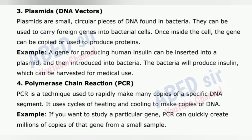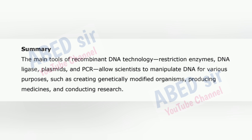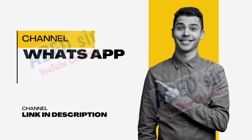The bacteria will produce insulin, which can be harvested for medical use. 4. Polymerase Chain Reaction – PCR. PCR is a technique used to rapidly make many copies of a specific DNA segment. It uses cycles of heating and cooling to make copies of DNA. For example, if you want to study a particular gene, PCR can quickly create millions of copies of that gene from a small sample. The main tools of recombinant DNA technology – restriction enzymes, DNA ligase, plasmids, and PCR – allow scientists to manipulate DNA for various purposes, such as creating genetically modified organisms, producing medicines, and conducting research.